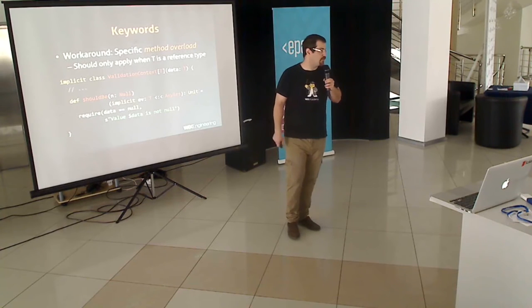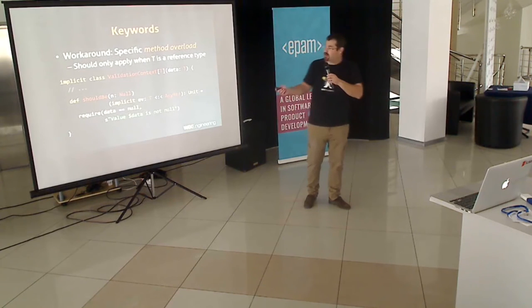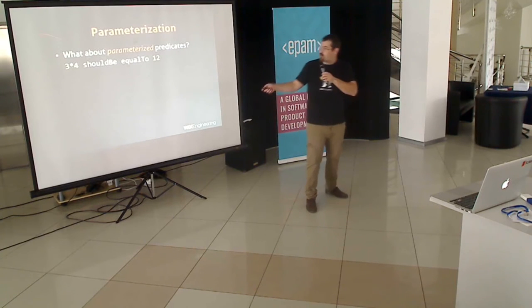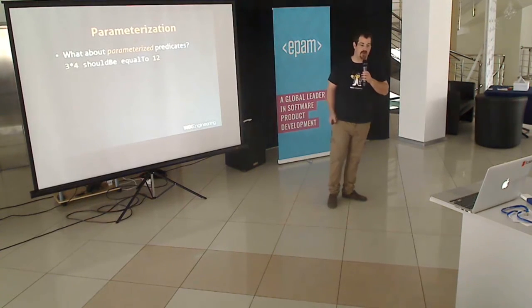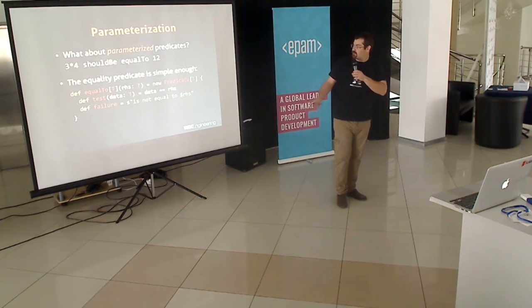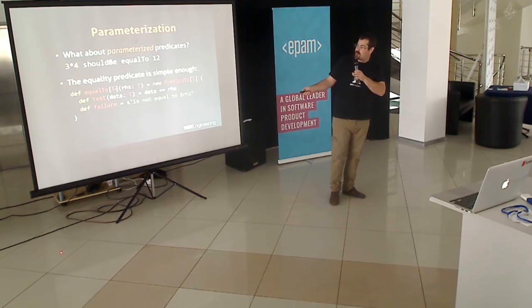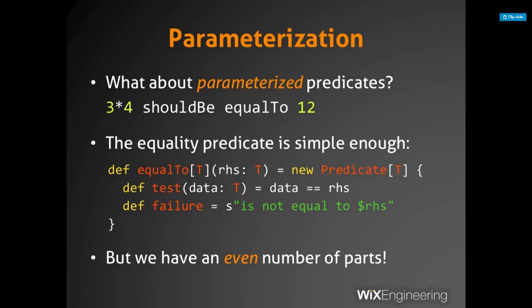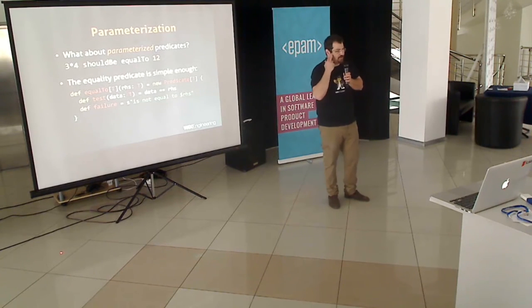What about parameterized predicates? We have '3 times 4 should be equal to 12.' The equality predicate is pretty simple to implement: we have our 'equalTo' method, it takes a type parameter T and the right-hand side of type T, and we implement the predicate with a test method that tests for equality and generates an appropriate message. But we have an even number of parts in our sentence — we've broken the odd number of parts rule again. The only solution is to add parentheses: '3 times 4 should be equalTo(12).'  Every library that gives you a DSL has this issue.